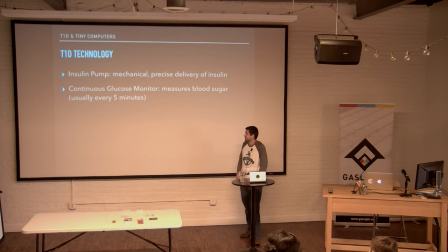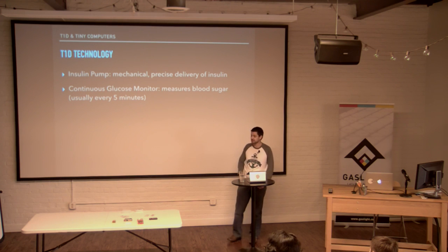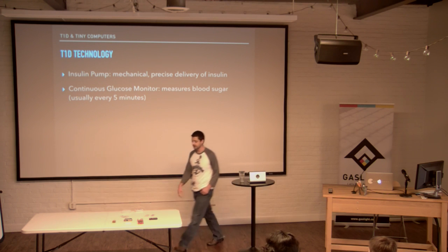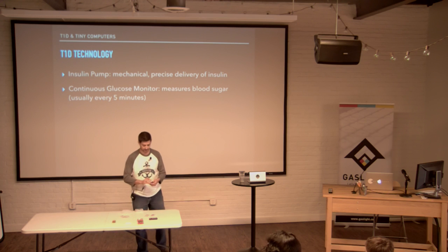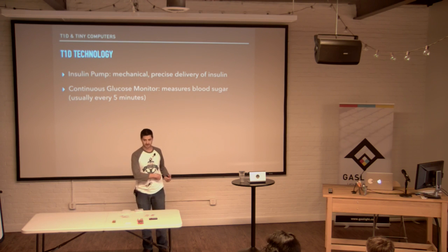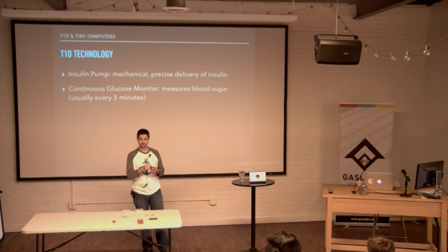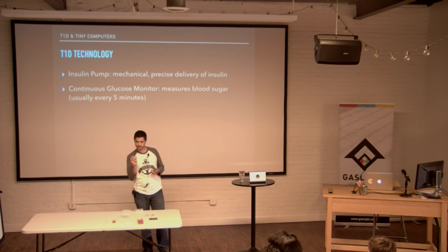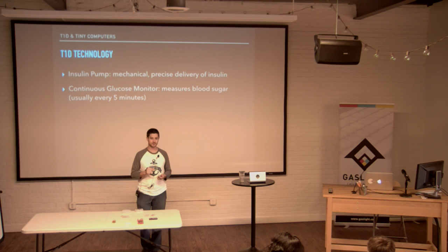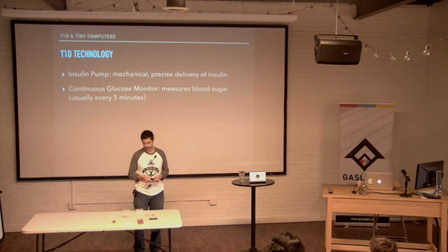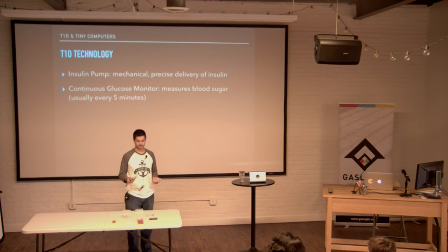The Type 1 diabetes technology that's out there right now — the state of the art on the market — has two main components. There's this thing called an insulin pump. If you can imagine this with a big tube attached, connected to your body, worn in your pocket — this is an insulin pump. It has a little reservoir of insulin and a small auger-type motor that very precisely pushes the right amount of insulin into your body. It can do both bolusing and basaling — constantly giving you a little bit of insulin, and when you tell it you're about to eat, it pushes a bit more.